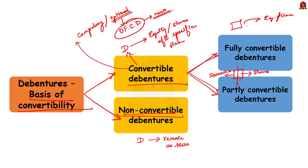That's all about this news article discussion. In this discussion, we discussed two important terms mentioned in the article: the DMAT account and optionally fully convertible debentures. Now with these points in mind, let us move on to the next article discussion.